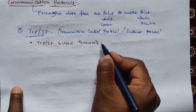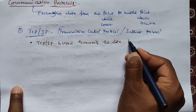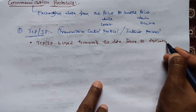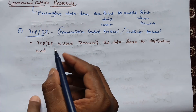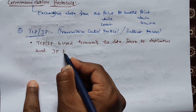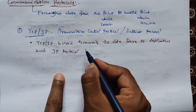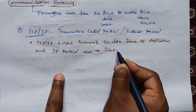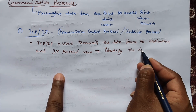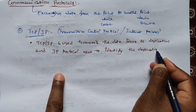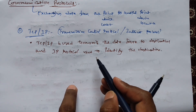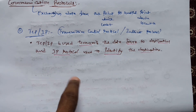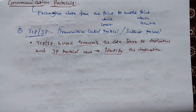TCP/IP means Transmission Control Protocol and Internet Protocol, used to transmit data from source to destination. The IP protocol is used to find out and identify the destination. TCP is used to transmit the data from source to destination; IP protocol is used to identify the destination connection.